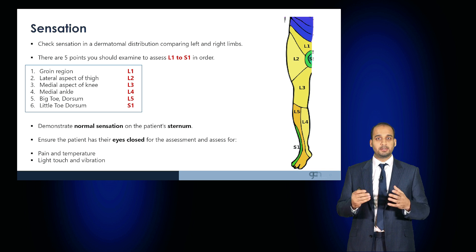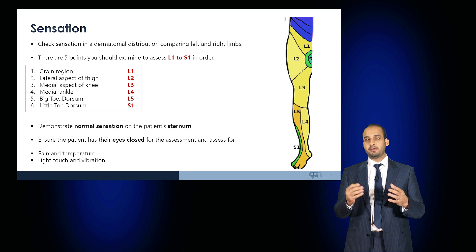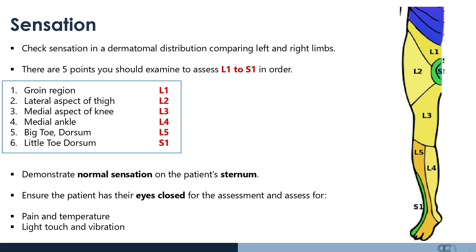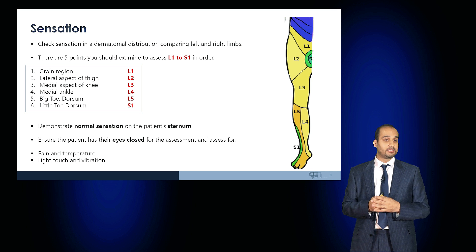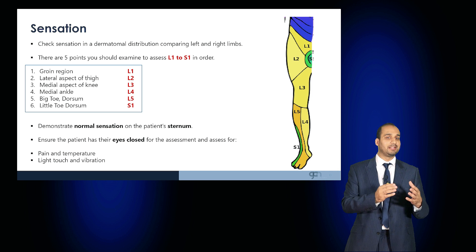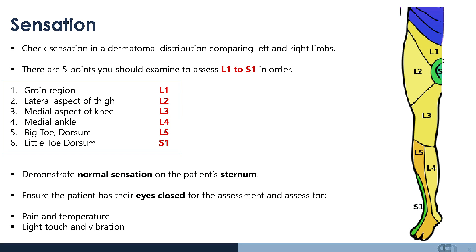Move on to examine sensation in a dermatomal distribution, comparing the left and right leg. There are five key points to assess dermatomes L1 through S1: L1 is tested at the groin region, L2 at the lateral aspect of the thigh, L3 at the medial aspect of the knee, L4 at the medial ankle, L5 at the big toe, and S1 at the dorsum of the little toe. First place the sensory object over the sternum to confirm the patient can appreciate normal sensation, then ask them to close their eyes as you test each dermatome. Examining pain and temperature assesses the spinothalamic tract; assessing light touch and vibration examines the dorsal columns.